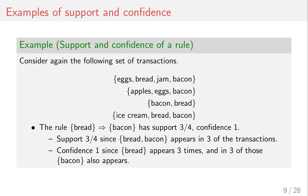Here's a concrete example using the transactions we saw previously. The rule "bread implies bacon" has support three out of four, because the items bread and bacon occur together in three of the four transactions — found in the first transaction, not the second, found in the third, and found in the fourth. The confidence is one, because every time bread appears, bacon also appears in every case.